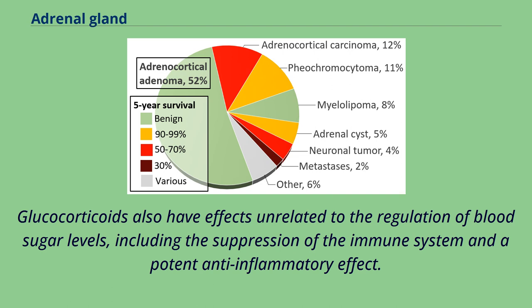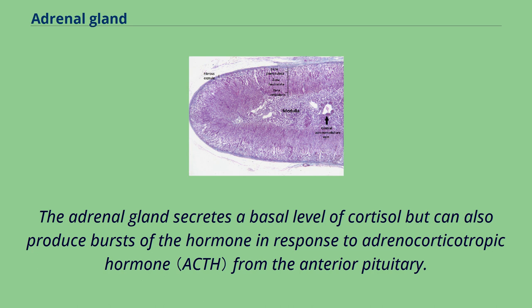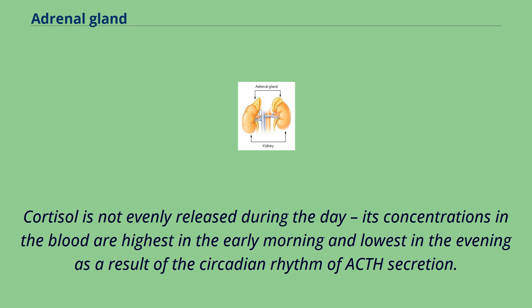Glucocorticoids also have effects unrelated to the regulation of blood sugar levels, including the suppression of the immune system and a potent anti-inflammatory effect. Cortisol reduces the capacity of osteoblasts to produce new bone tissue and decreases the absorption of calcium in the gastrointestinal tract. The adrenal gland secretes a basal level of cortisol but can also produce bursts of the hormone in response to adrenocorticotropic hormone from the anterior pituitary. Cortisol is not evenly released during the day; its concentrations are highest in the early morning and lowest in the evening as a result of the circadian rhythm of its secretion.